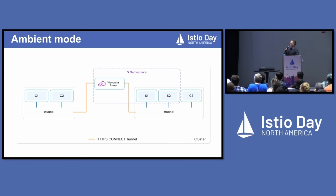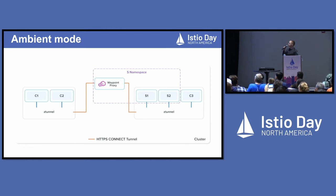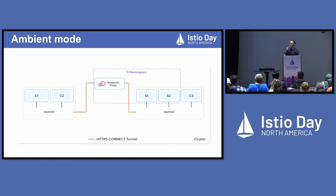Now that we have a background on what we're trying to solve with scalability, I want to give a quick overview of ambient. This is the new architecture for ambient mode. The big difference is that instead of sidecars, we have two different components. We have the z-tunnel — this is a per-node component with a much smaller responsibility than sidecars. Its real job is to get traffic from point A to point B with secure encryption and policies. It's not doing HTTP telemetry, routing, JWT authentication, or all these other features. For that, we introduce the waypoint, which has all the same functionality as sidecars or Ingress gateways, but it's decoupled from the applications.